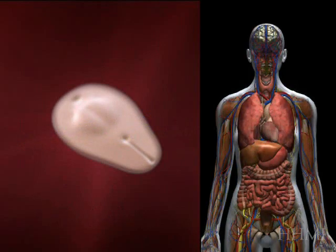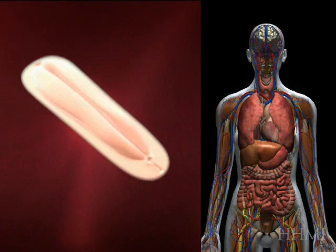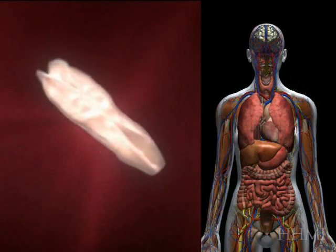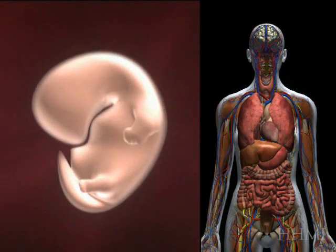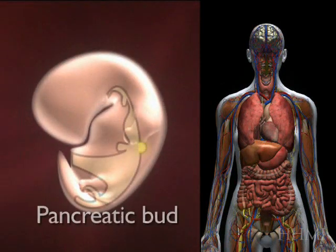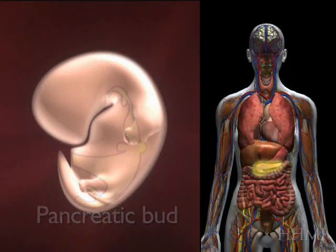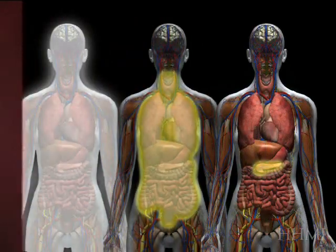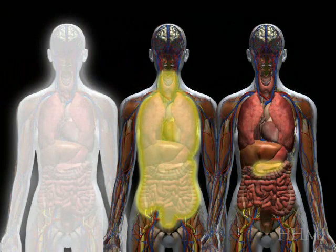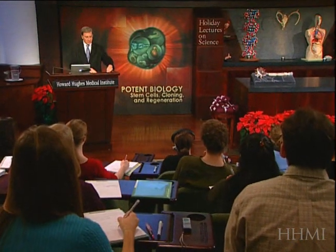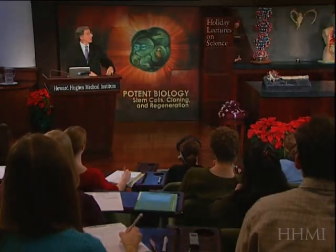To give one more detailed example of this, let's think about the development of the endoderm and, in this case, the formation of the pancreas. There's the pancreatic bud, which comes out of the endodermal derivative. I'm going to talk a bit today about the pancreas as one example of how an organ and the cell types within that organ get made.